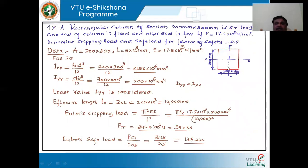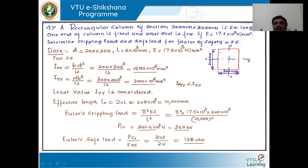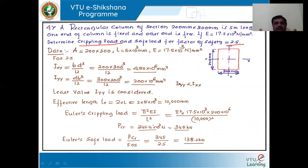Let us look into one more important problem. It involves a rectangular section with breadth 300 and depth 200. A rectangular column section 200 by 300, 5 meters long, with one end fixed and another end free. Young's modulus for the material is 17.5 into 10 to the power of 3 newton per m squared. Determine the crippling load and safe load; the factor of safety is 2.5. In this problem, we use only Euler's equation to find the crippling load.